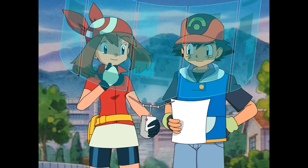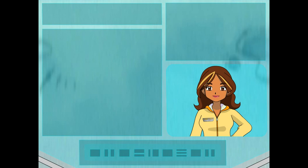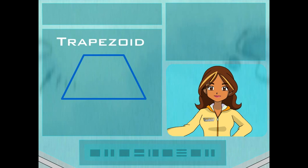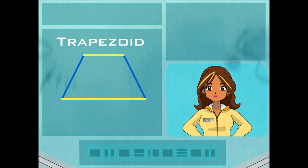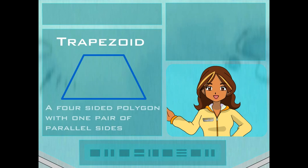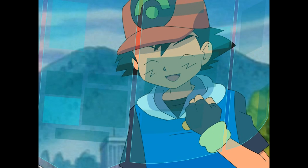We have to find a trapezoid, though. Is that a parallelogram? Nope. Here's your trapezoid — look at the pairs of sides. Only one pair is parallel. A trapezoid is a four-sided polygon with only one pair of parallel sides. Awesome! Now we'll be able to find our trapezoid-shaped windows!